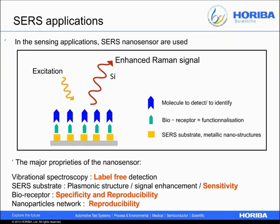Now let's conclude in a few words. We spoke about the SERS effect and its applicability, and we learned that the SERS technique may offer many advantages, especially in sensing applications. But it is not a push-button technique yet — some improvements are needed. One of them concerns the production of inexpensive and efficient SERS substrates, which is not a trivial task. The other improvements concern the experimental SERS configuration, specifically the control of the chemistry at the surface of the nanoparticles, for which very good knowledge of the chemical interactions is required. Thank you very much for your kind attention.